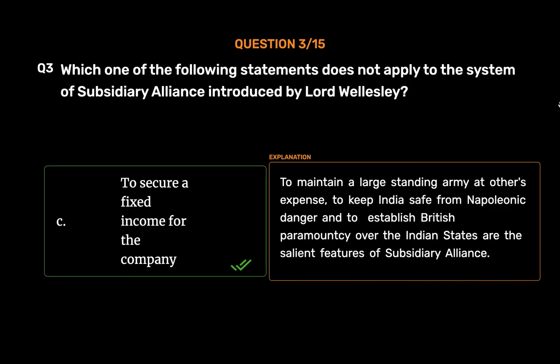To maintain a large standing army at others' expense, to keep India safe from Napoleonic danger, and to establish British paramount sway over the Indian states are the salient features of the subsidiary alliance.